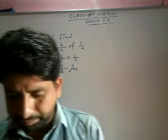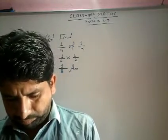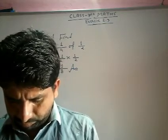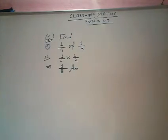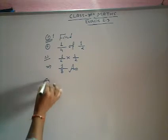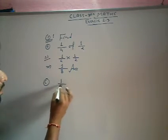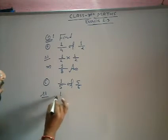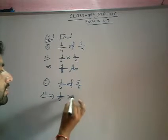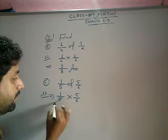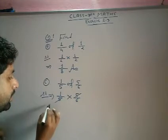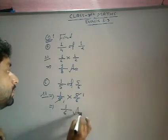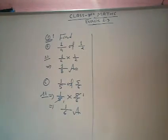Next, 1 upon 5 of 5 upon 6. 1 upon 5 of means into 5 upon 6. So 5 by 5 cancels and 1 remaining. This means 1 upon 6. Answer.